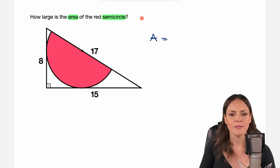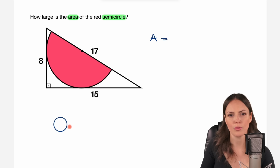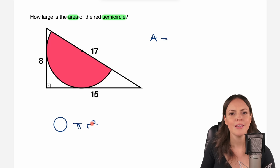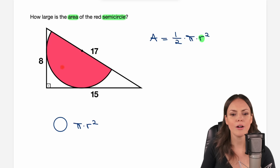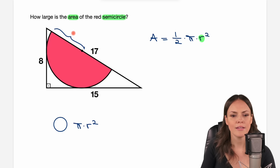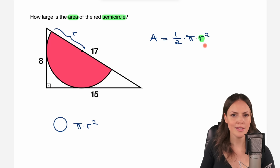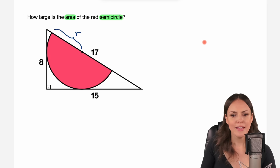What's the formula for the area of a semicircle? If we want to find the area of a full circle, the formula is π times the radius squared. But here we only have a semicircle, so we just take half of this formula: one half times π times the radius squared. As soon as we know the radius of our semicircle — from the center to the edge — we can find the area. So let's try and find the radius.